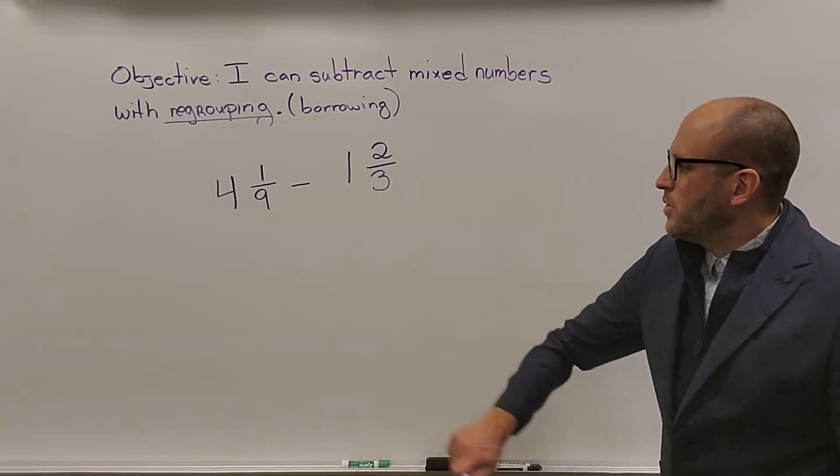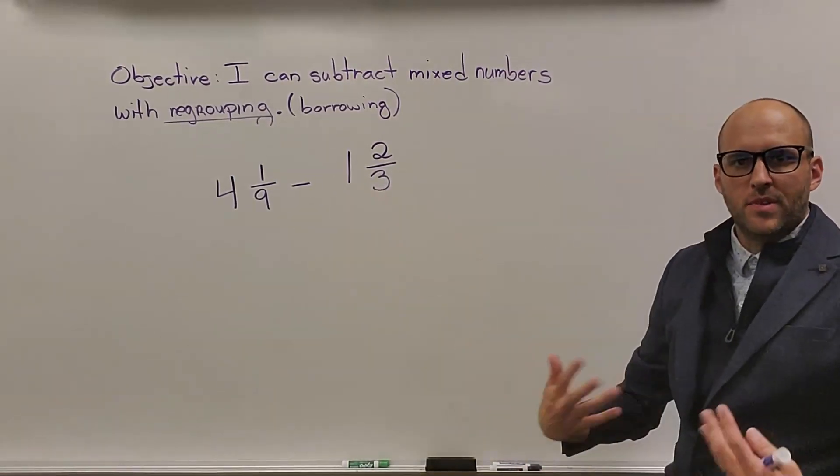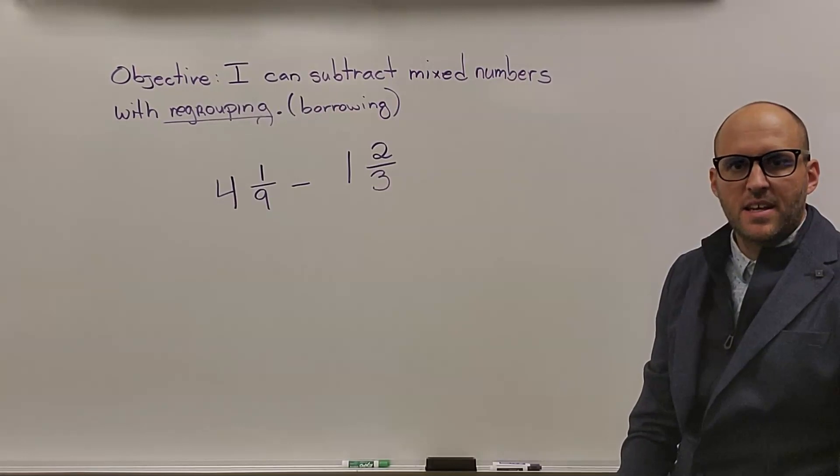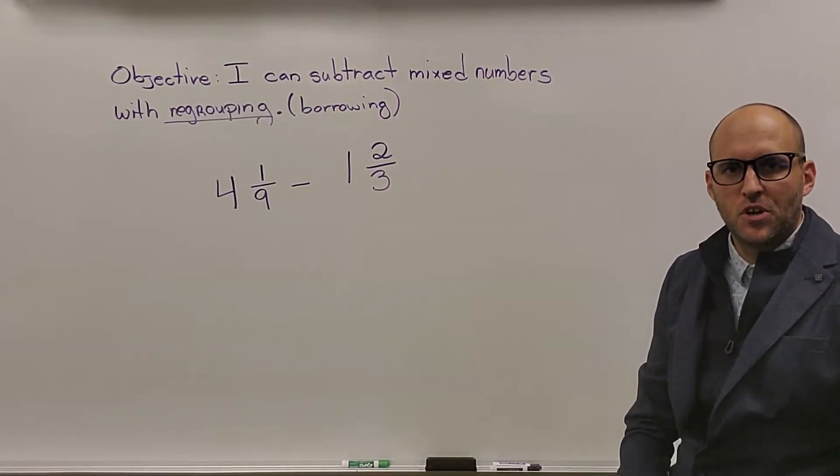All right friends, here we are. 4 and 1 ninth minus 1 and 2 thirds. Let's see if you can subtract this mixed number and come up with the correct answer.